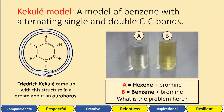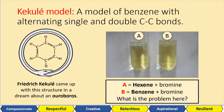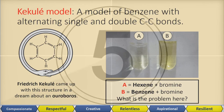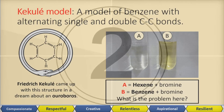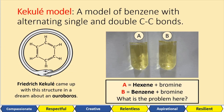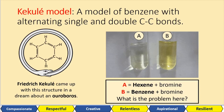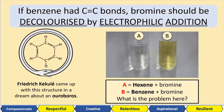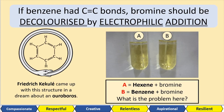I've got two substances here. Substance A, which is hexene and bromine. Substance B, which is benzene and bromine. Think about the structure of the Kekulé model. Pause the video — what is the problem with this demonstration? You should remember that bromine water is decolorized when we have a carbon-carbon double bond, and that's why hexene is decolorizing the bromine water. However, that's not happening with benzene. So if benzene had carbon-carbon double bonds, the bromine should be decolorized by the mechanism of electrophilic addition. So this was one of the first issues we found — something is wrong with this structure.